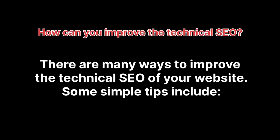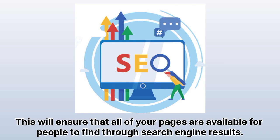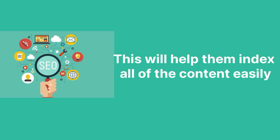How can you improve the technical SEO? There are many ways to improve the technical SEO of your website. Some simple tips include: crawling and indexing — make sure your site is crawled and indexed by Google, Bing, Yahoo, etc. This will ensure that all of your pages are available for people to find through search engine results. XML sitemaps — include an XML sitemap in your website header so that search engines know how much content is on each page.